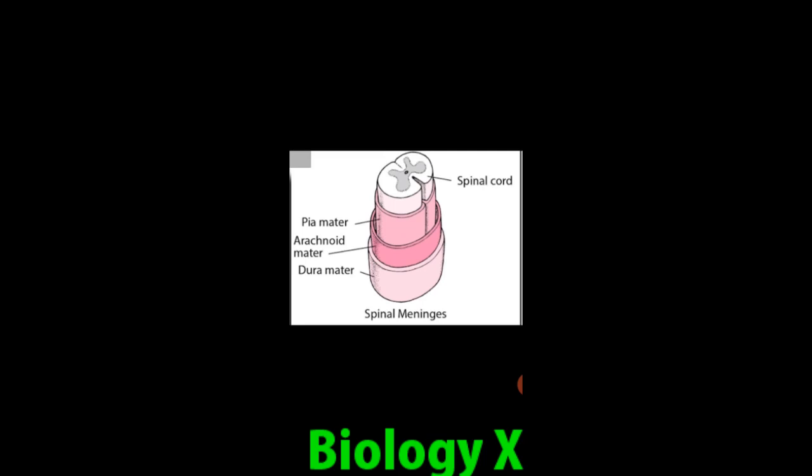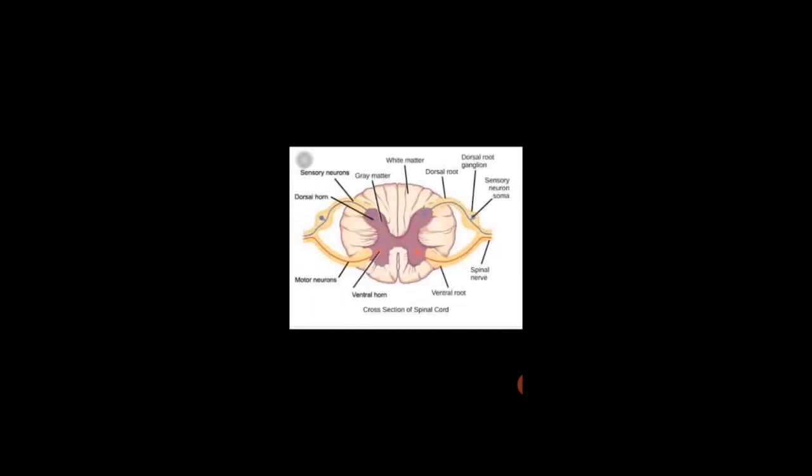The spinal cord is made up of gray matter and white matter. This is the opposite of the brain — in the brain, the outer portion is made up of gray matter and the inner portion is white matter. But in your spinal cord, the inner portion is made up of gray matter and the outer portion is made up of white matter.